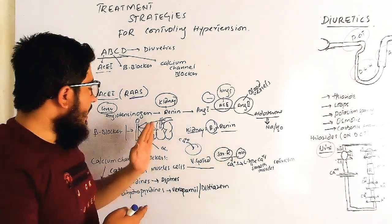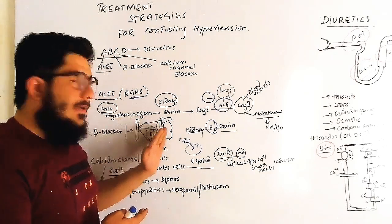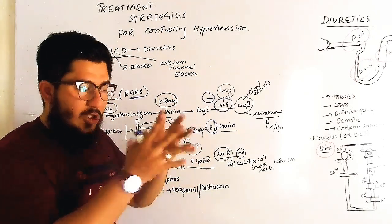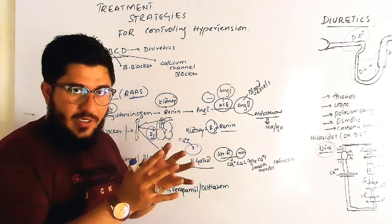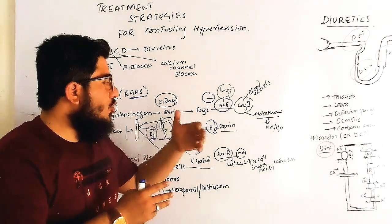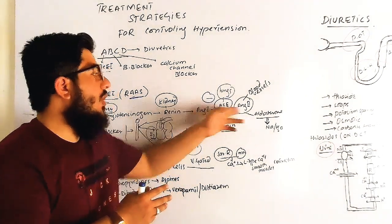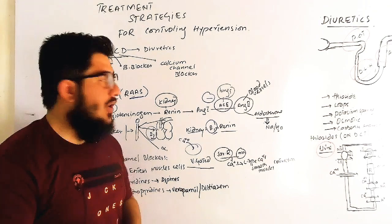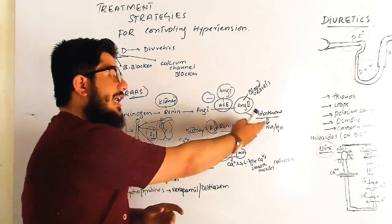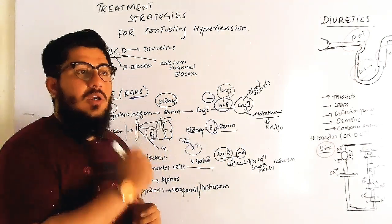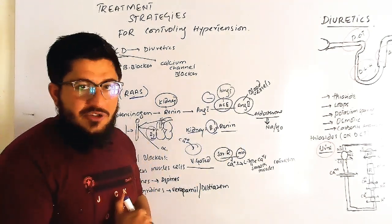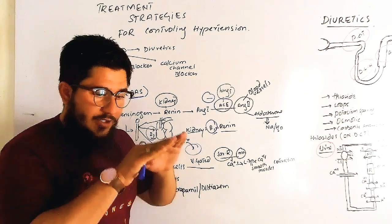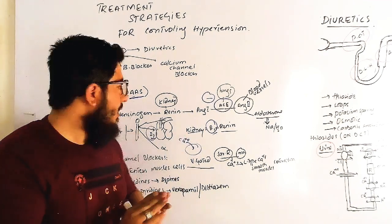If we block beta-1 receptors in the heart, cardiac output decreases and heart contractions are reduced. Blocking beta-1 in the kidney prevents renin release, so angiotensin-2 is not formed, blood vessels do not constrict, and aldosterone-driven sodium and water retention is blocked. The result is a decrease in blood pressure.